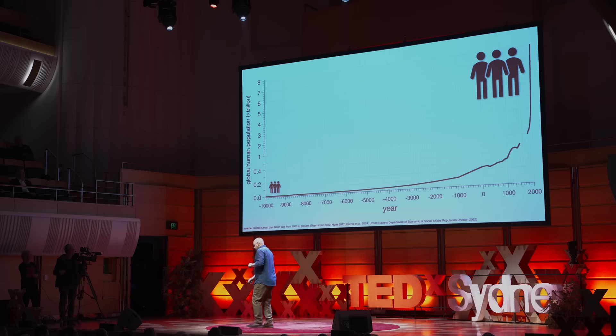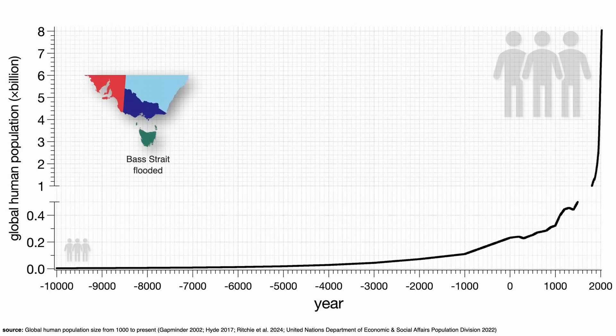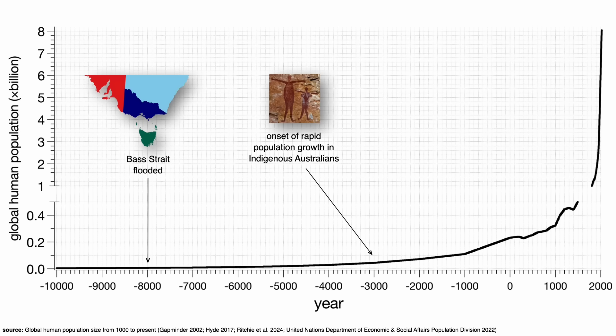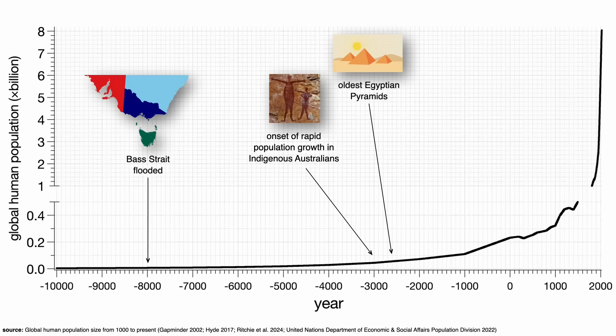Here's the global population trend going back about 12,000 years. I want to put this into some context, so I'll put up a few events with which you might be familiar. About 10,000 years ago, Bass Strait flooded and Tasmania separated from the mainland. Then about 5,000 years ago, there was a big uptick in population size as well as technological innovation in Indigenous Australia. About 500 years later, the oldest pyramids in Egypt were built.